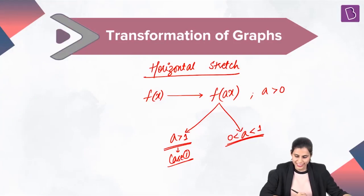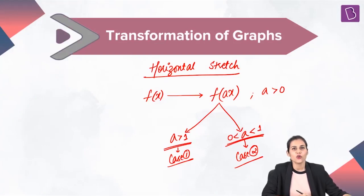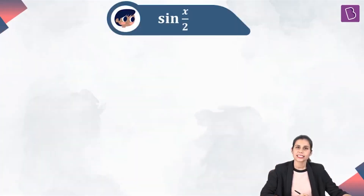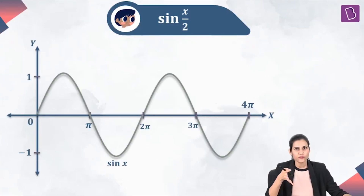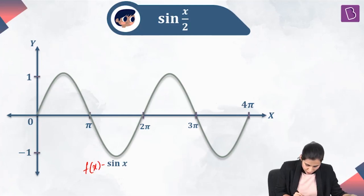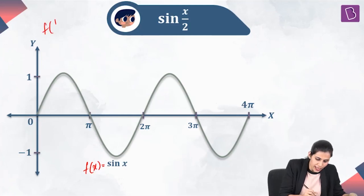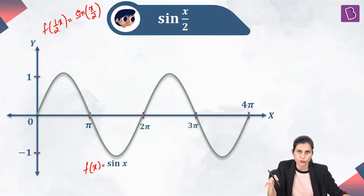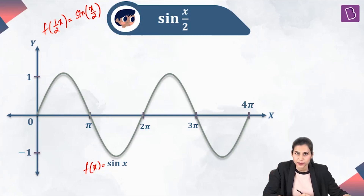Next, let's address case 2 — how to plot the graph of f(ax) from the graph of f(x) when a is a fraction strictly between 0 and 1. Let's understand this from an example. I have the graph of sin x as f(x), and I want the graph of f(x/2), which is sin(x/2). I have drawn the graph of sin x in the interval 0 to 4π. Let's plot sin(x/2) in the same interval.